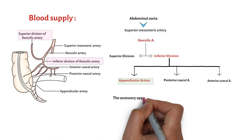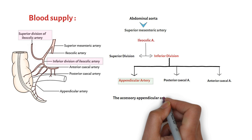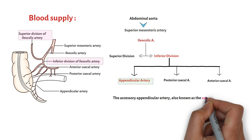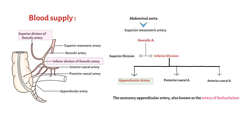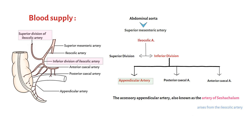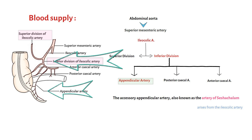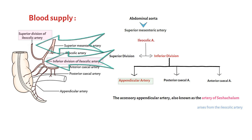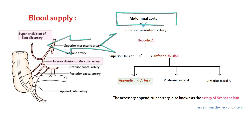The accessory appendicular artery, also known as the artery of Cheatle, arises from the ileocolic artery. In summary, the appendicular artery arises from the inferior division of the ileocolic artery, which is a branch of the superior mesenteric artery, which in turn arises from the abdominal aorta.